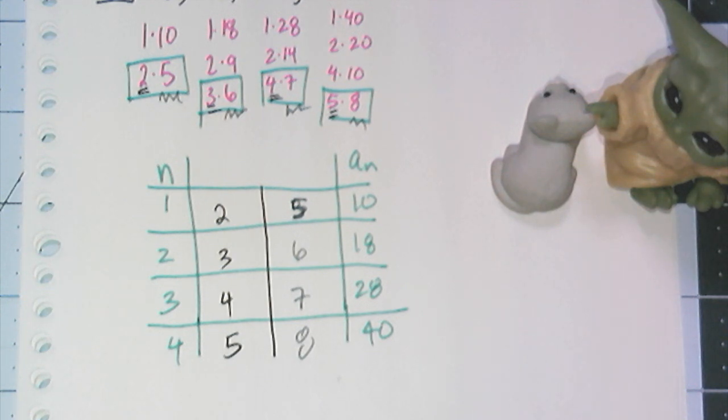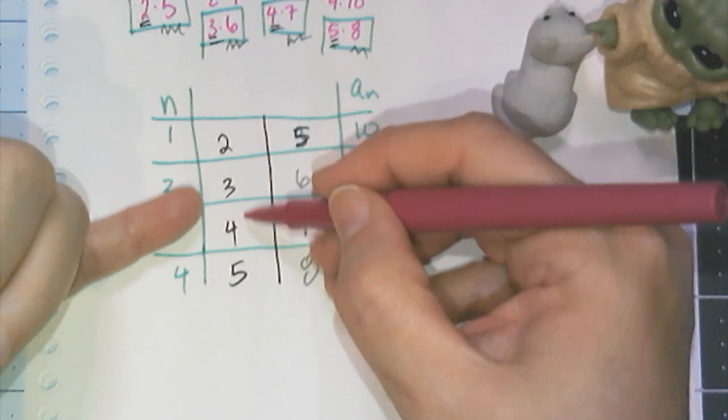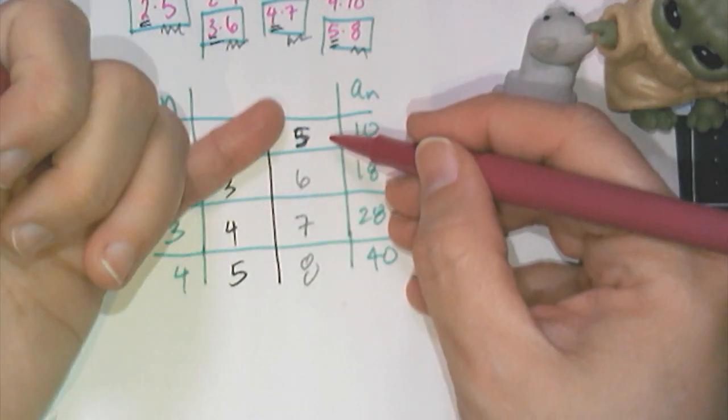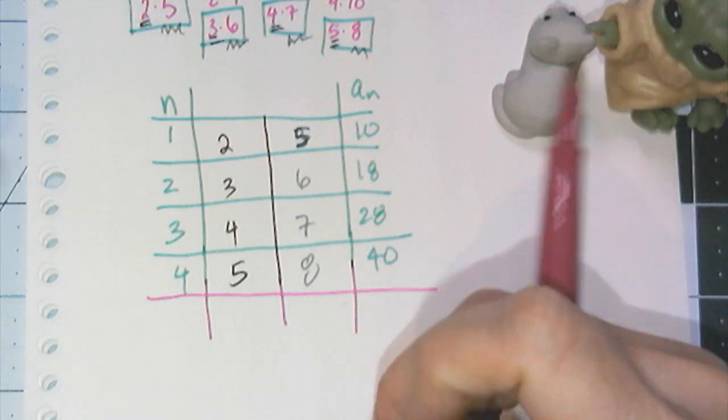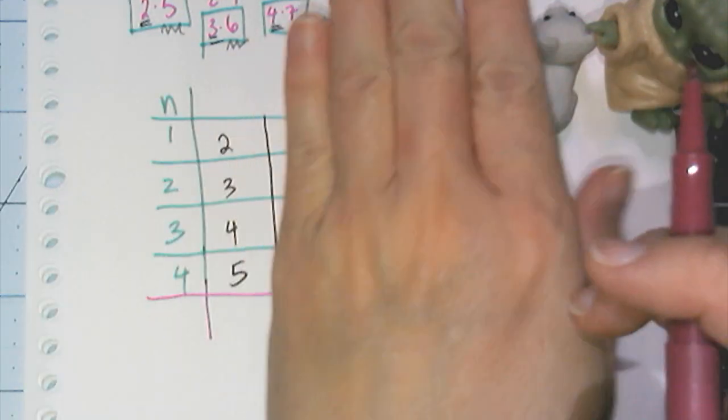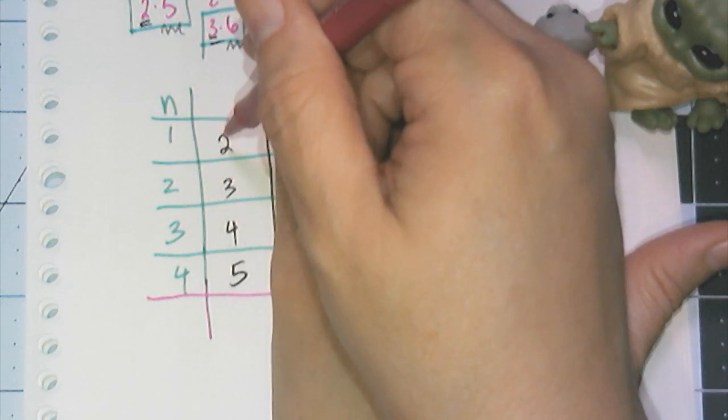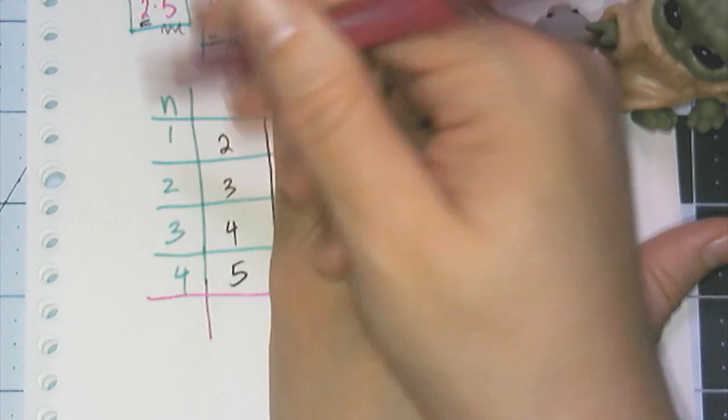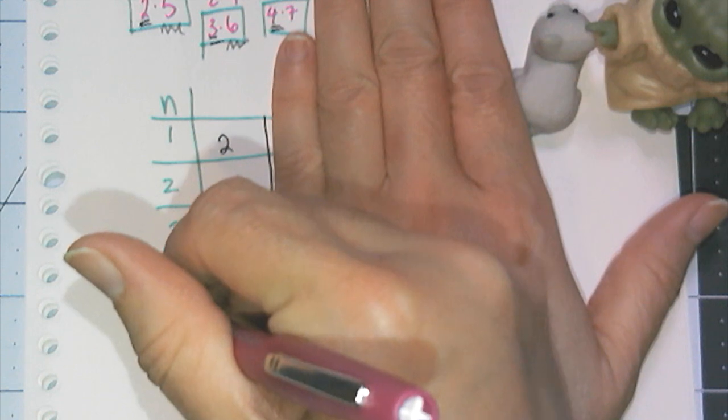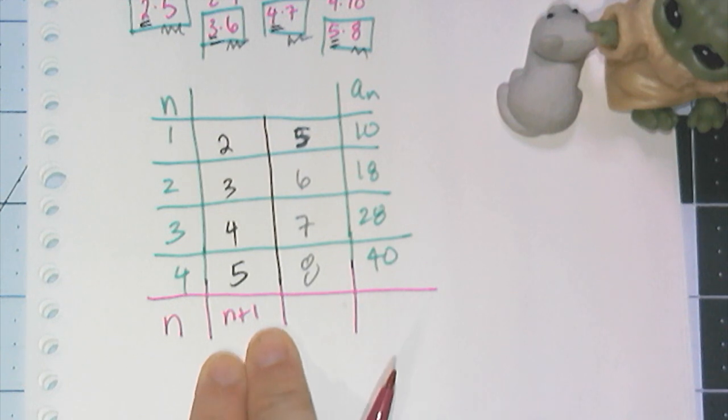And so now my goal is to basically just find the rule for this column and then find the rule for that column. So what I've done is I've turned my quadratic into two linear sequences, which are much easier to deal with. So I'm going to ignore all of this and I'm going to think, okay, how do I turn a 1 into a 2? The same rule turns a 2 into a 3, same rule turns a 3 into a 4, same rule turns a 4 into a 5. That's quite simple. All I'm going to do is I'm going to take n and I'm going to add 1 to it. So this column here is really just this column, the term number plus 1.